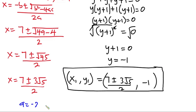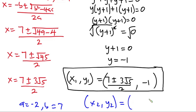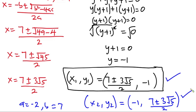When a equals negative 2 and b equals 7, the roles of x and y are swapped, so the second solution is x equals negative 1, and y equals (7 plus or minus 3 root 5) divided by 2. These are our final answers. You can go ahead and plug these values into the original equations to verify. I hope you found this video useful — please give it a thumbs up, subscribe to the channel, and thanks a lot for watching. See you again in the next video.